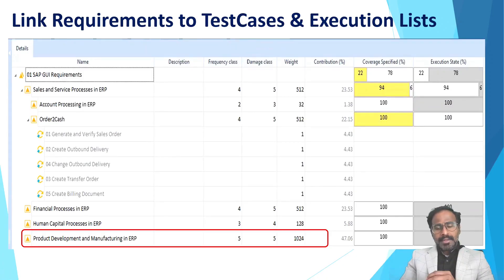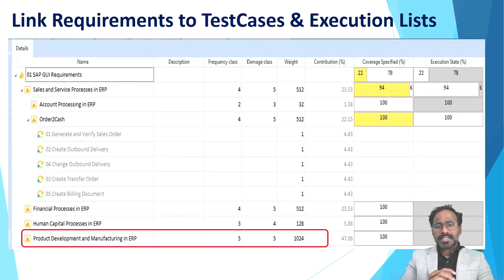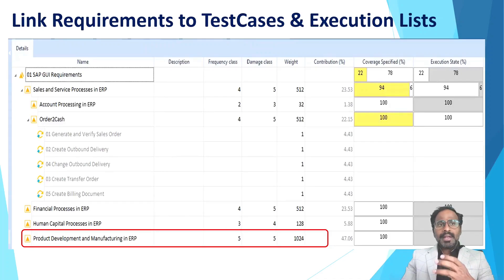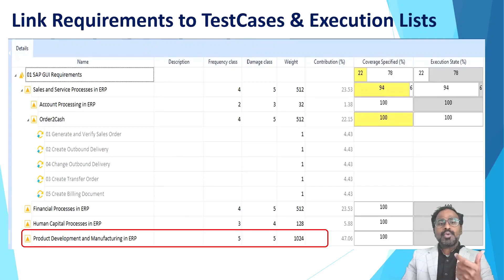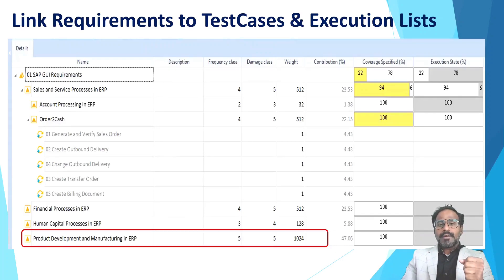So how easy it is to maintain requirements and maintain traceability. Now you understand how to create models holding technical information of your system under test, feed that information to create test case models using a model-based approach, create execution lists and link test cases to them, manage your requirements, link them to test cases and execution lists, and perform risk-based testing using the requirements dashboard where you can analyze frequency class, damage class, and the weightage of your requirement.